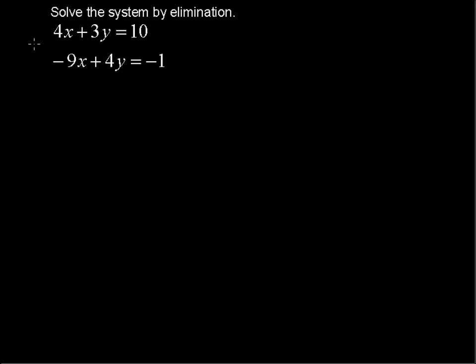Solve the system by elimination. 4x plus 3y equals 10, and negative 9x plus 4y equals negative 1.